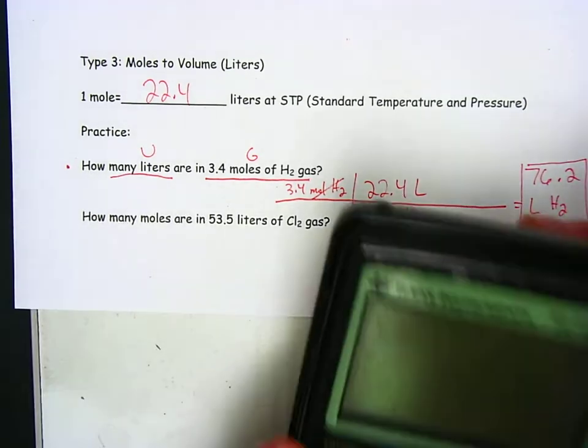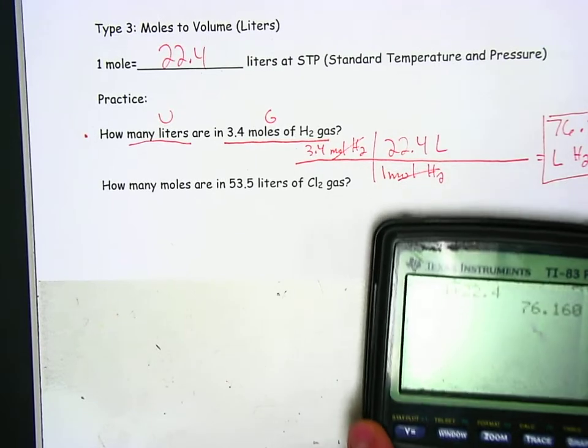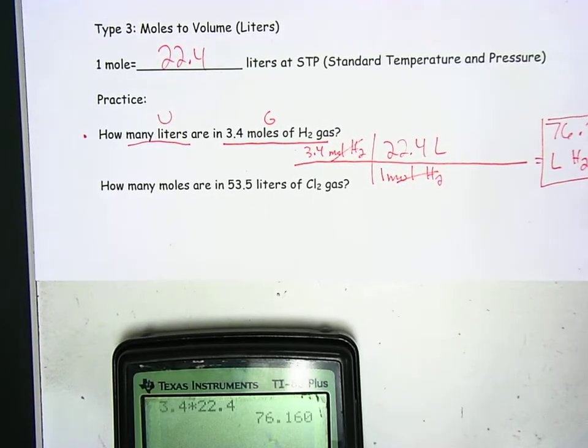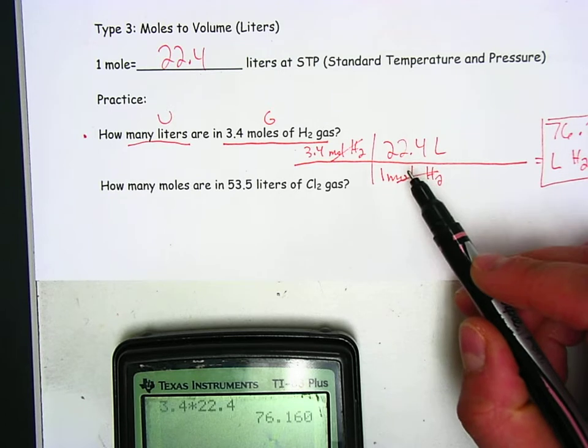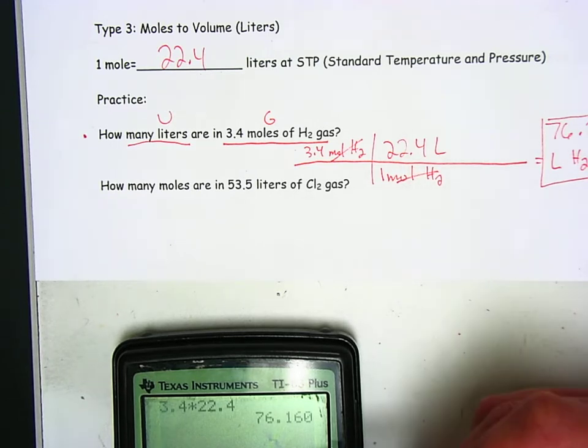So again, you multiply the top numbers: 3.4 times 22.4. Technically divide by 1, you would still end up with 76.2.